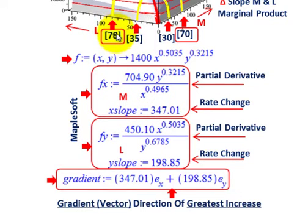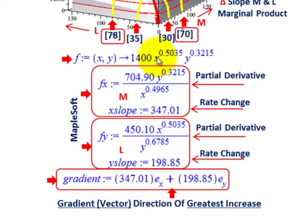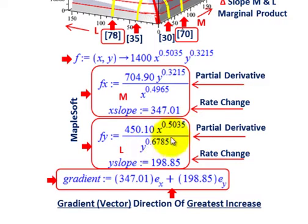Plugging in our point — 78 for labor and 70 for material — into our partial derivative, we're going to get our change or slope here in material at that point: 347, or $347. That's the rate of change we're looking at. For y, you do the same thing — hold your x variable and its exponent constant, and just take y. Take its exponent times the coefficient 1400, you get about 450. Subtract 1 from its exponent: 0.3215 minus 1 gives you negative 0.6785, so y is raised to 0.6785. Plugging in 78 for labor and 70 for material into the partial derivative, you're going to get a slope for labor at the point of 198.85 — that's really the rate of change.